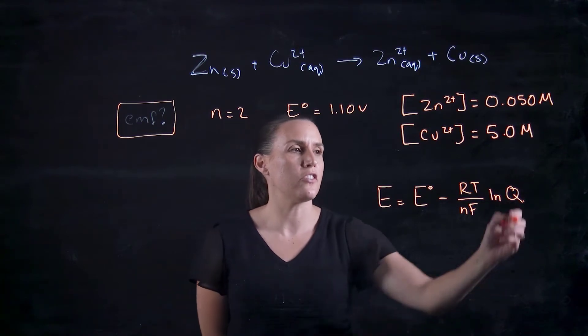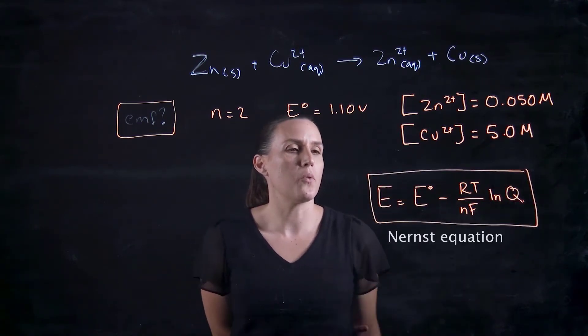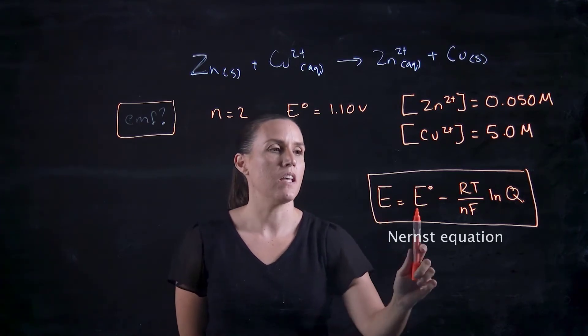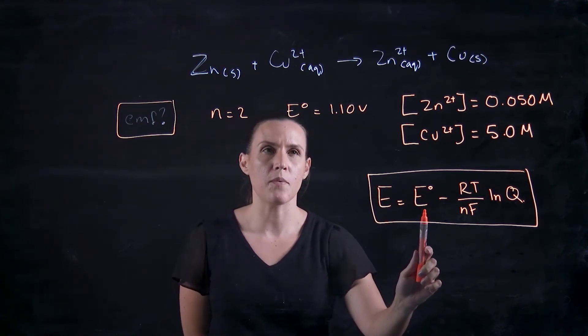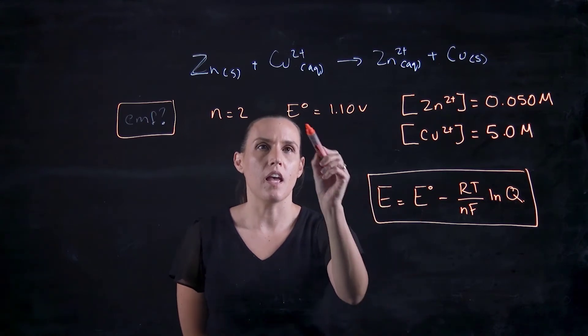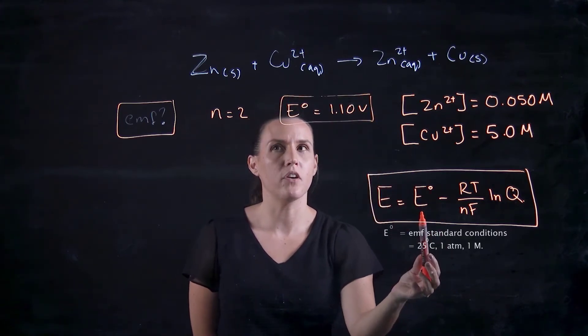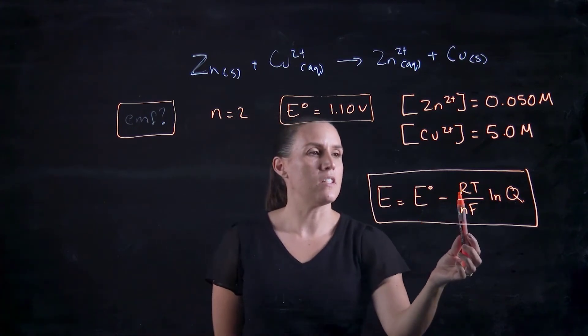So we're going to use this formula here. We've got the E at that given time is the E0, so the EMF of the system initially. So that's our 1.1 volts using RT.